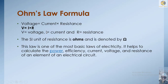The formula for Ohm's law is voltage is equal to current into resistance, written as V is equal to I into R. Here V is voltage, I is current, and R is resistance. The SI unit of resistance is Ohms. This law is one of the most basic laws of electricity. It helps to calculate the power, efficiency, current, voltage, and resistance of an element of an electrical circuit.